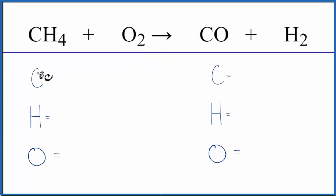But let's go ahead and balance it. We'll count the atoms up on each side. We have one carbon, four hydrogens, and two oxygens on the reactant side. And then on the product side, one carbon, two hydrogens, and then just the one oxygen.